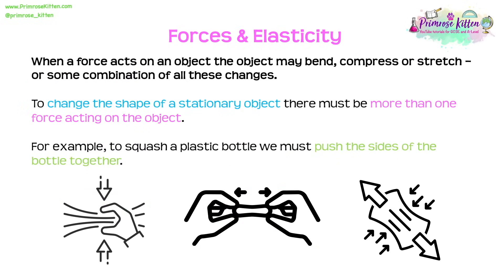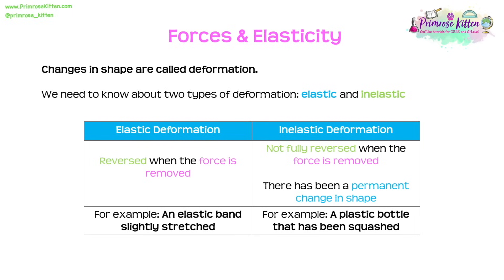When a force acts on an object, the object may bend, compress, stretch, or some combination of these. To change the shape of a stationary object, there must be more than one force acting on it — for example, to squash a plastic bottle we must push the sides together. Changes in shape are called deformation, and we need to know about two types: elastic and inelastic.